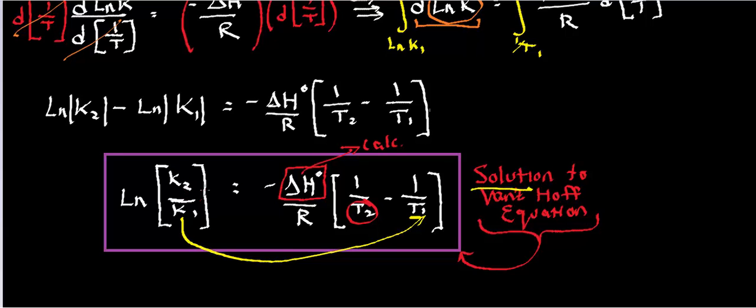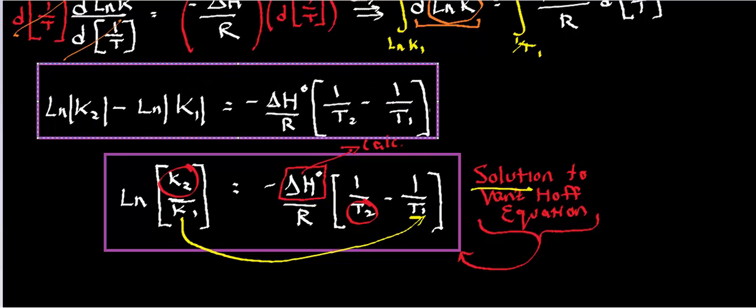However, this may or may not be the most useful form of this because you're going to have to isolate the second equilibrium constant anyways. So another completely valid way you could keep this equation is just like this. Because if you have it in this form, then if you want k2, you can actually just add ln of k1 to both sides. And actually, just for the sake of knowing how to do this, let's go ahead and do that to show how you would isolate k2.